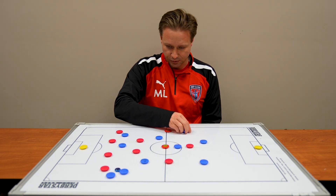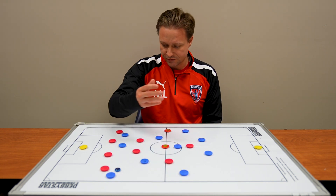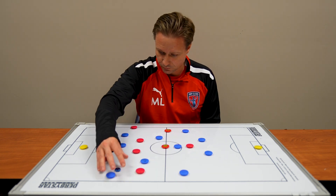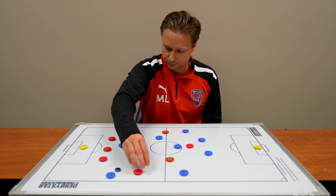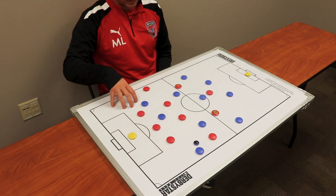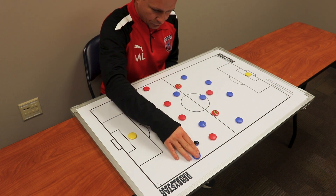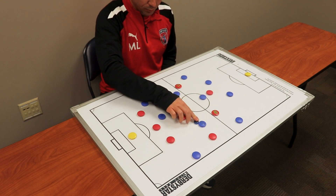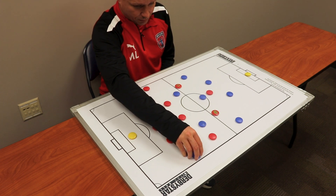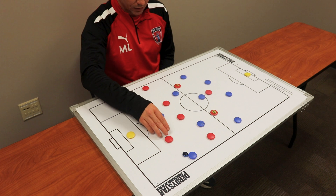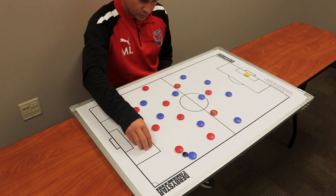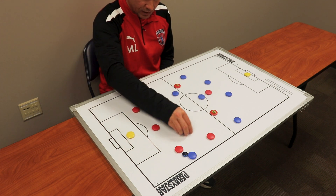Another time to exploit teams in the wide area is if they play with a back three, which a lot of teams do. A narrow three across the back could leave space in the wide areas for you. So if you can put a player out wide and find a way to get the ball out there, he'll find himself with plenty of space where he can dribble and carry the ball into the box. That also pulls their three apart a little bit more to create space centrally for runners to come through.